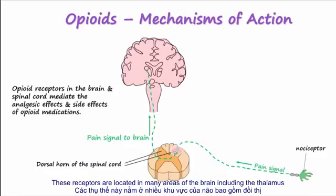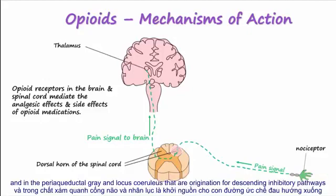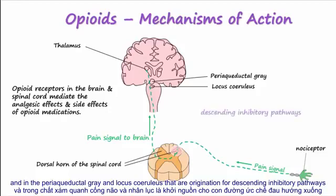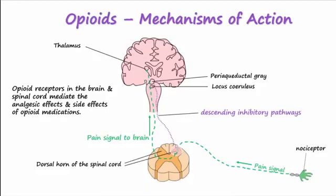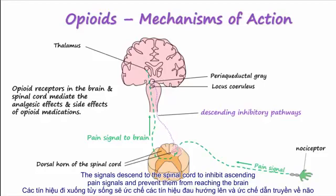These receptors are located in many areas of the brain, including the thalamus, and in the periaqueductal gray and locus coeruleus, which are originations for descending inhibitory pathways. When these pathways are activated, the signals descend to the spinal cord to inhibit ascending pain signals and prevent them from reaching the brain.